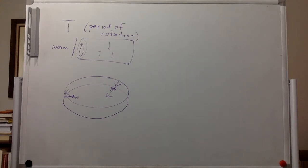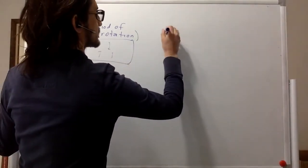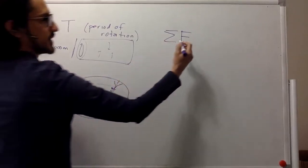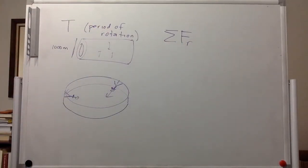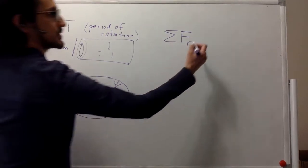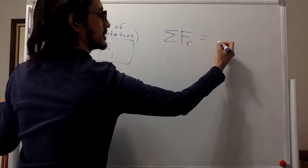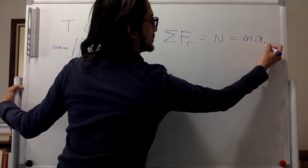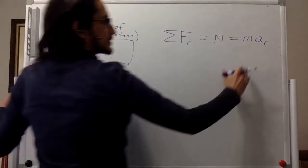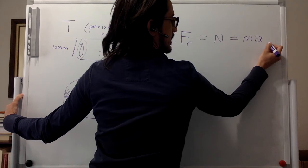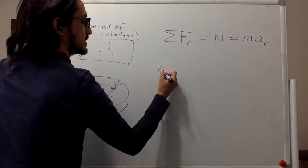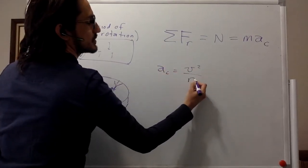Alright. So we are going to have the sum of forces, and this is going to be towards the center. So it's the radial direction. So the sum of forces in the radial direction, you're just going to have the normal that is keeping you in place towards the center. And that is equal to the mass times the radial acceleration. And of course, the radial acceleration is the centripetal acceleration. And the centripetal acceleration is v squared over r.